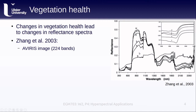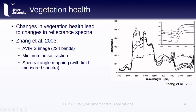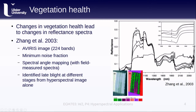They used the minimum noise fraction to reduce the 224 bands and focus on the bands that contained the most information. Using spectral angle mapping with field-measured reflectance spectra, they were able to identify tomato crops with different stages of late blight disease using only the hyperspectral image. The image on the left shows a false color composite image of the field, while the image on the right shows the same field with the different stages of disease identified. This kind of application is important for monitoring crop health and identifying potentially devastating crop diseases early so that they can be addressed before they become truly disastrous.